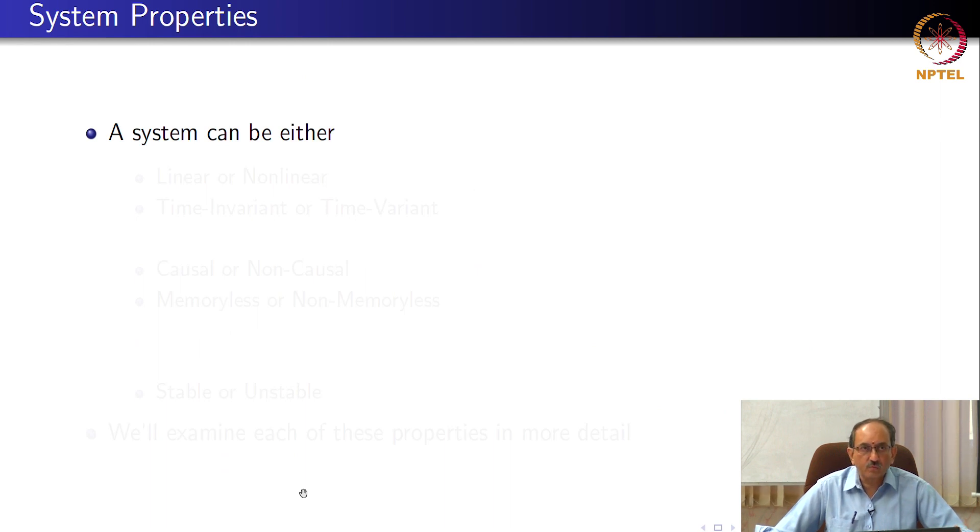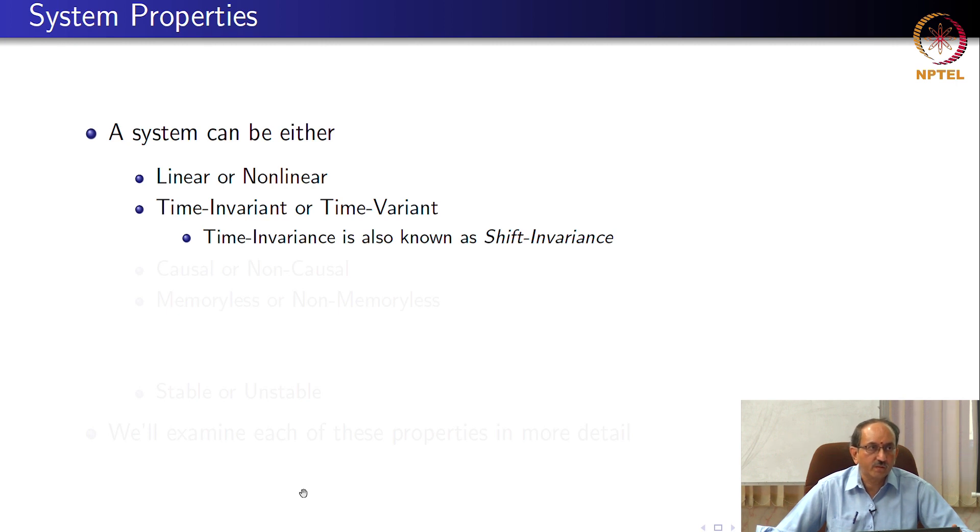Properties that you would have seen in the context of continuous time: systems can either be linear or non-linear, time invariant or time variant. By the way, time invariance is also known as shift invariance. So, LTI or LSI linear shift invariant systems is another common terminology. And a system can be causal or non-causal, memoryless or non-memoryless.